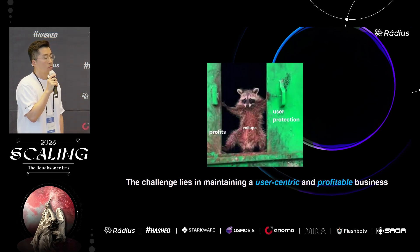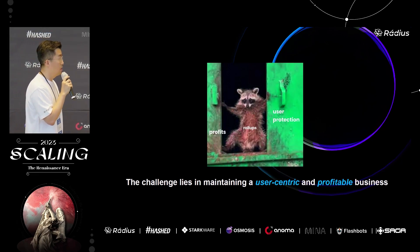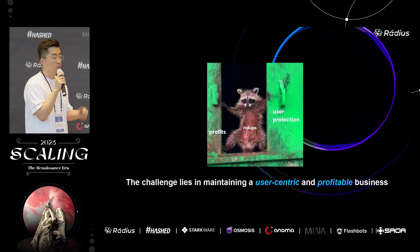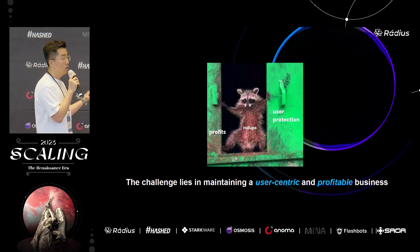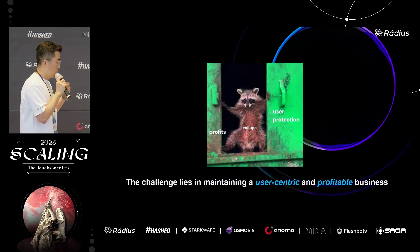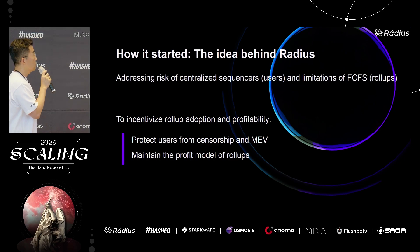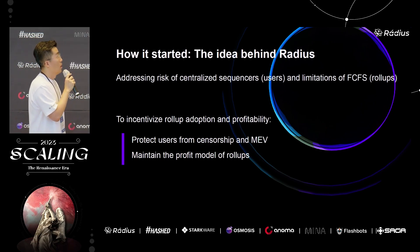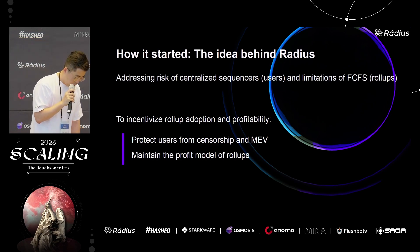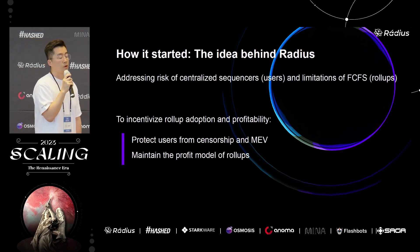Rollups need to retain their users while maintaining economic sustainability. The challenge lies in being user-centric — protecting users from harmful MEV that may arise from centralized sequencers — while also being profitable enough to run their businesses. There should be some way to make profit to support this economic sustainability. That's why we started Radius: to address the risks of centralized sequencers and solve the limitations of FCFS, incentivizing rollup adoption and profitability.